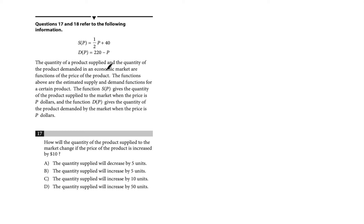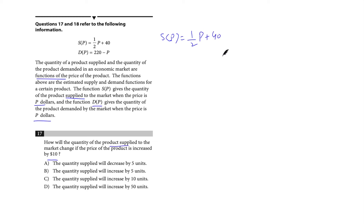Now let's look at an SAT past paper question. Questions 17 and 18 refer to supply and demand functions. s(p) gives the quantity of a product supplied when price is p dollars; d(p) gives quantity demanded at price p. Question 17 asks: how will the quantity supplied change if the price increases by $10?